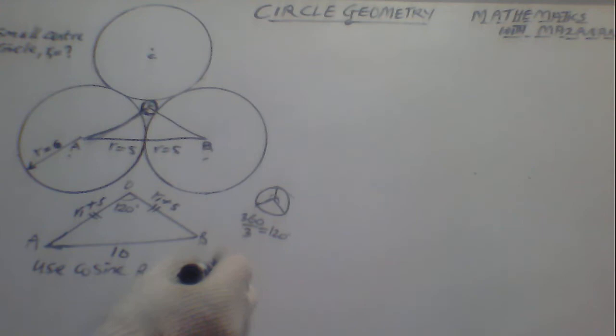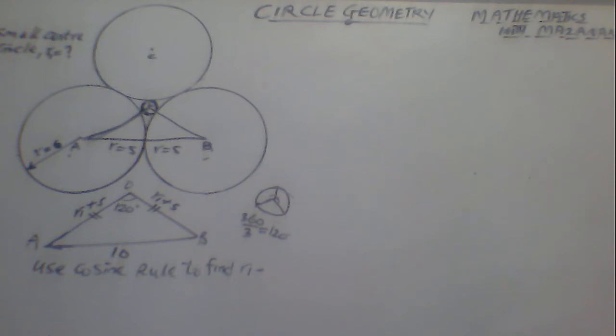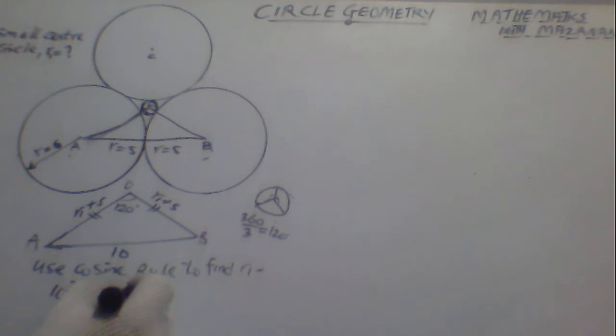We use the cosine rule to find r1. In this triangle, AB is 10. Applying the cosine rule: AB² = OA² + OB² − 2(OA)(OB)cos(120°). This gives us 10 squared equals (r1 plus 5) squared plus (r1 plus 5) squared minus 2 times (r1 plus 5) times (r1 plus 5) times cos(120°).